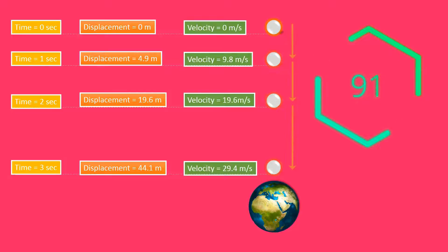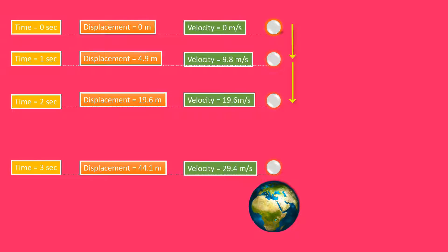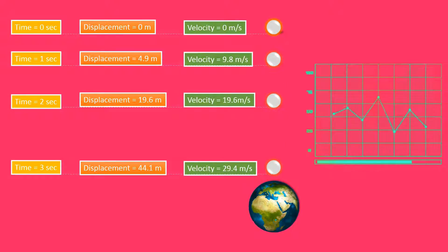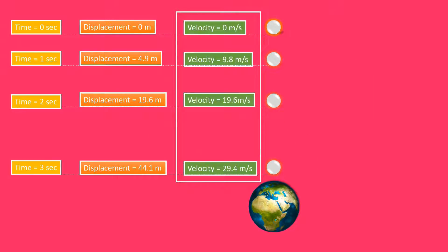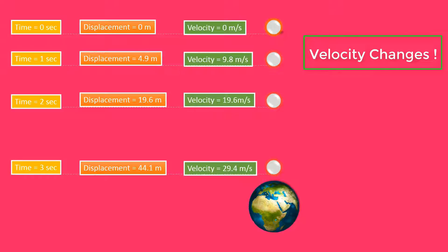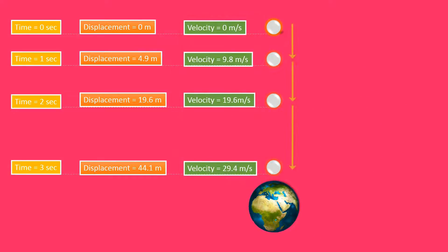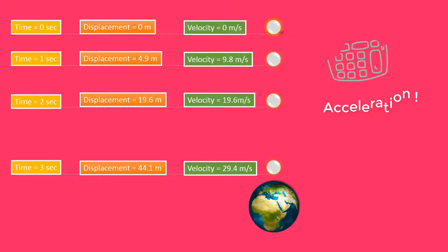We see that the velocity of a body is increasing as it is falling down, because the body covers greater displacement between 1 and 2 seconds than between 0 and 1 seconds. Similarly, displacement is greater between 2 and 3 seconds than between 1 and 2 seconds. Every second the body covers greater and greater displacement, so velocity increases. When velocity changes, acceleration is produced — hence a falling body has acceleration.